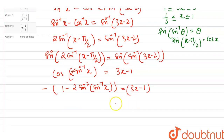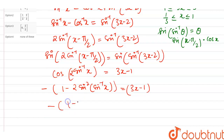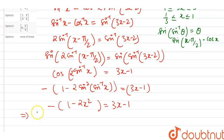Using the concept sin(sin⁻¹θ) = θ, we convert: sin²(sin⁻¹x) = x². So the equation becomes -(1 - 2x²) = 3x - 1, which simplifies to 2x² - 3x = 0.